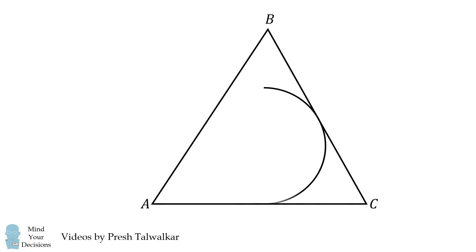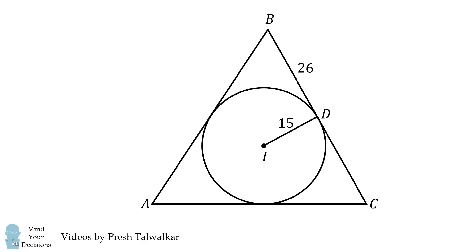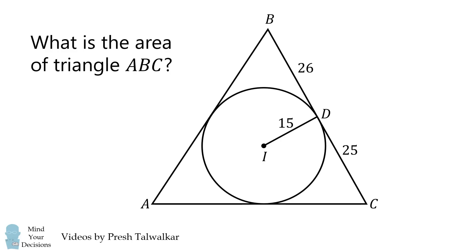Triangle ABC has an inscribed circle I. The inscribed circle is tangent to BC at point D. If the radius of the inscribed circle is 15, BD is equal to 26, and DC is equal to 25, what is the area of triangle ABC?